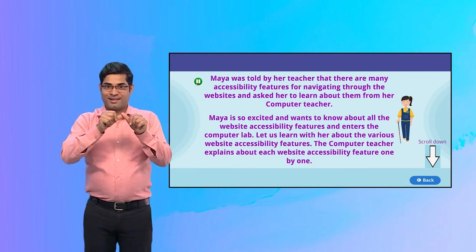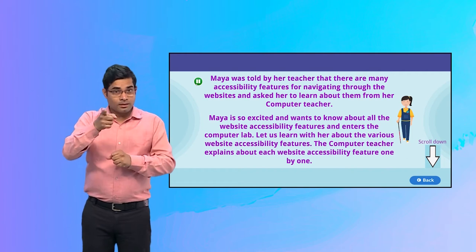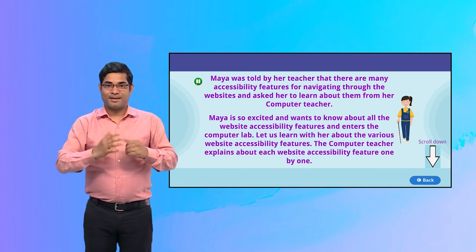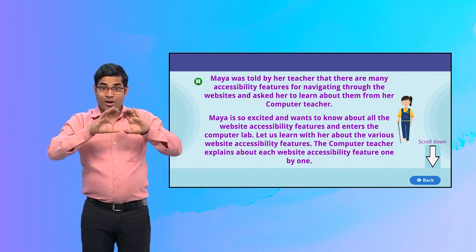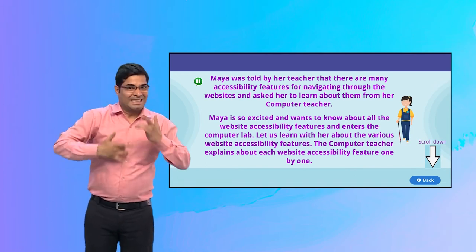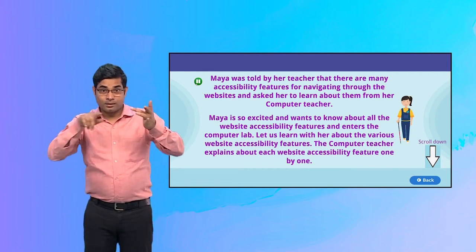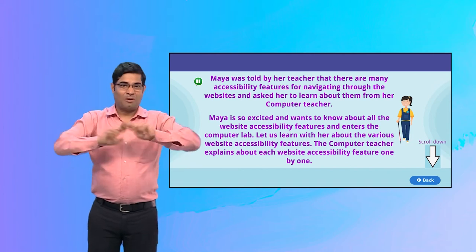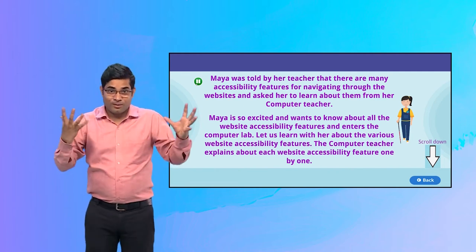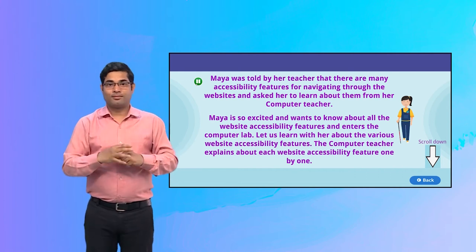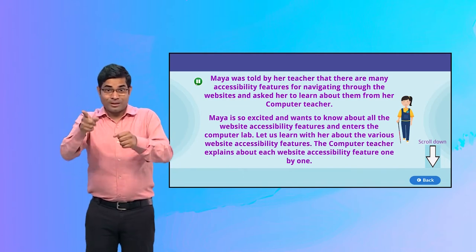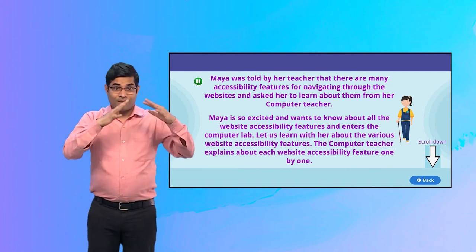Maya was told by her teacher that there are many accessibility features for navigating through websites, and asked her to learn about them from her computer teacher. Maya is excited and wants to know about all the website accessibility features and enters the computer lab. Let us learn along with her about the various website accessibility features. The computer teacher explains about each website accessibility feature one by one.